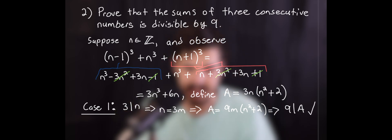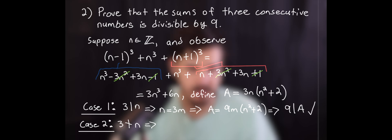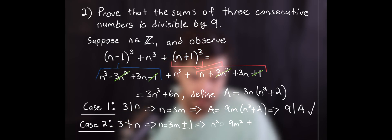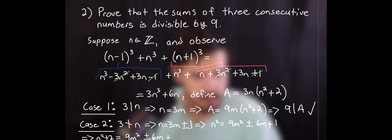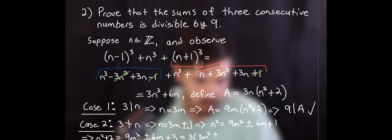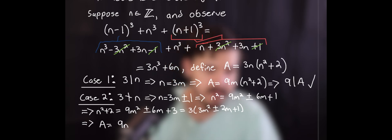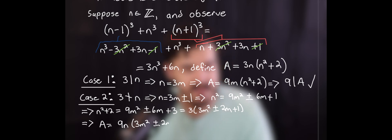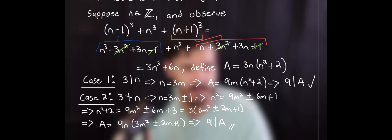Our second case is if three does not divide n, meaning n can be represented as three m plus or minus one. Squaring both sides gives n squared equals nine m squared plus or minus six m plus one. Adding two to both sides and factoring out a three from the right-hand side gives three times three m squared plus or minus two m plus one. Plugging that back into our original equation gives a equals nine n times three m squared plus or minus two m plus one, so nine divides a in this case too. Since nine divides a whether three divides n or not, we have completed our proof.